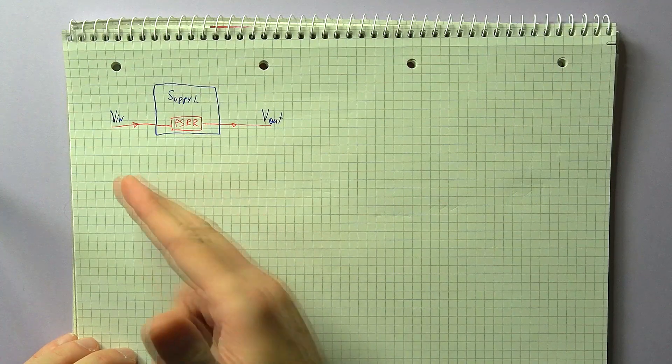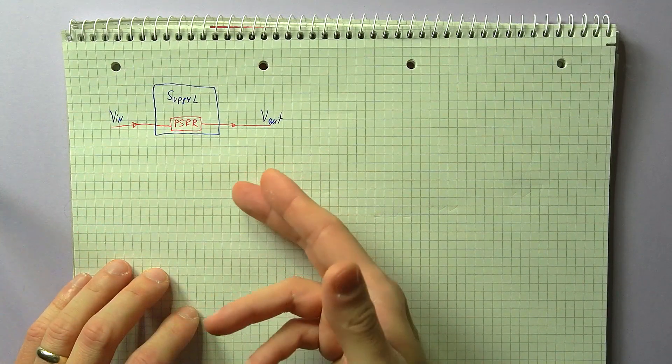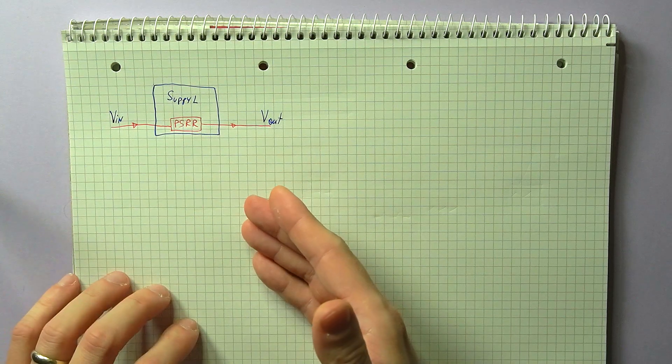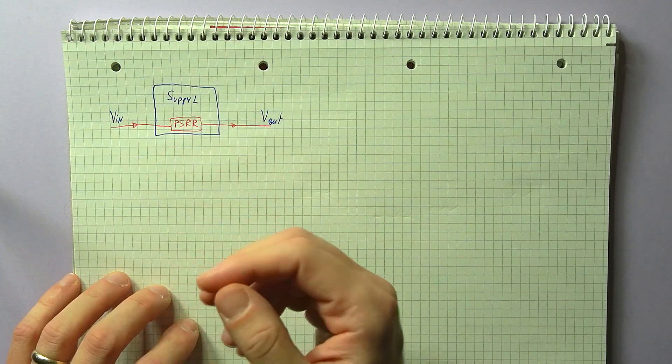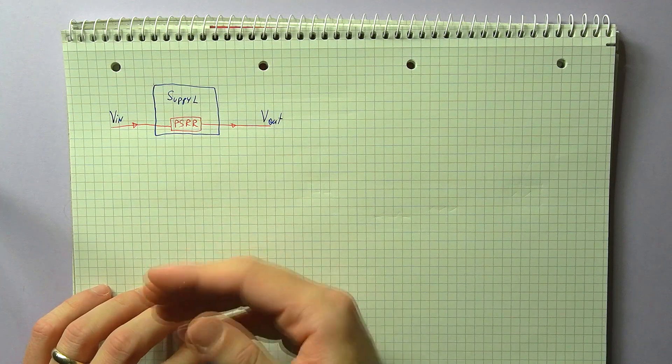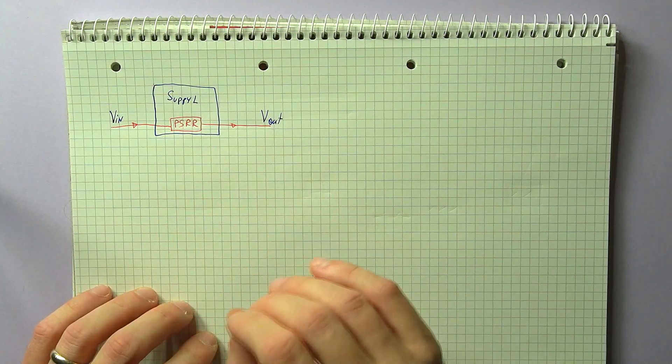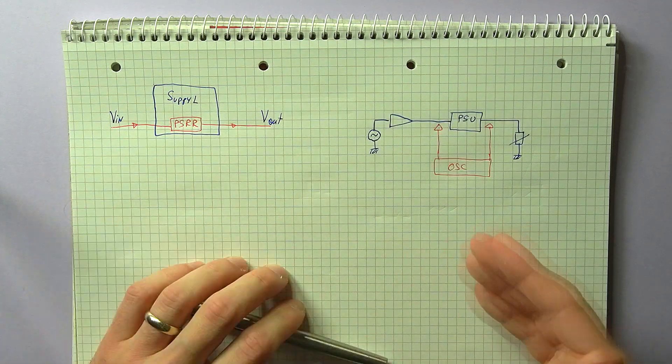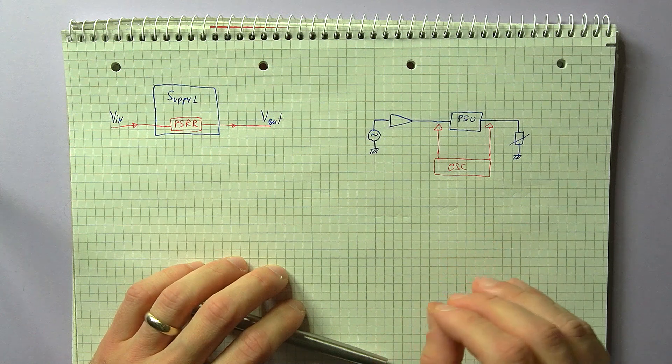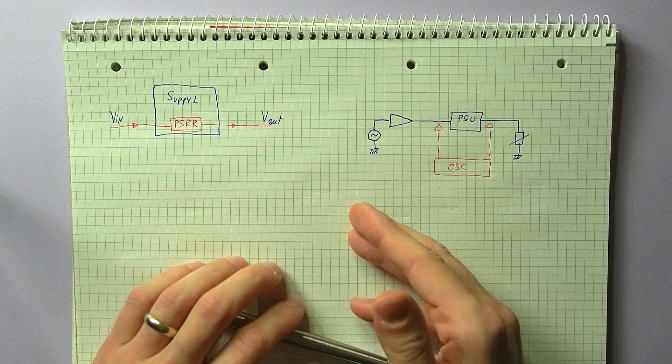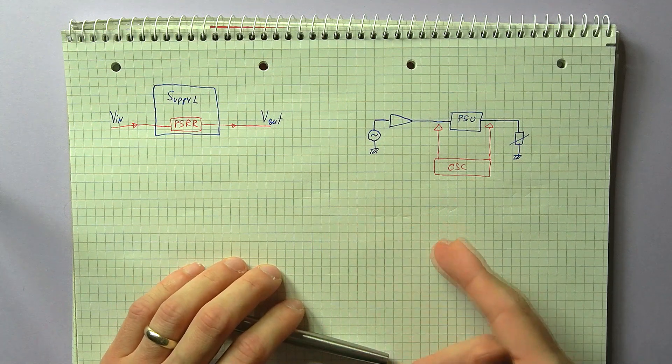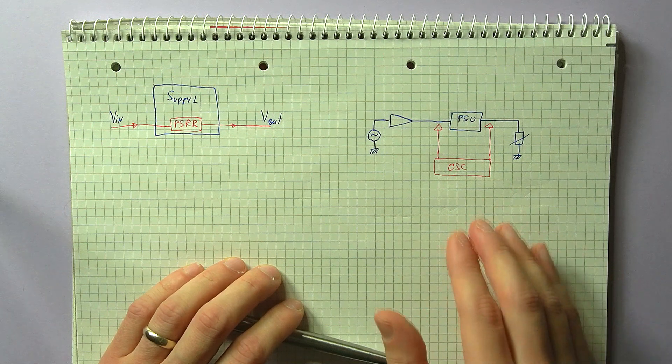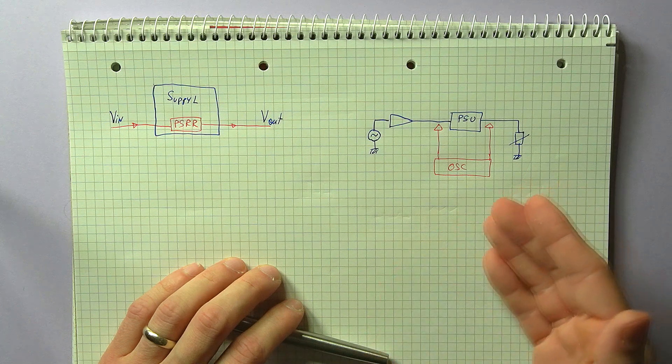When it comes to noise coming from the input side, the measure by which a supply will be able to filter it out is characterized by its power supply rejection ratio. This is a parameter that describes the attenuation the supply will present at different frequencies to noise present on the input side. So it's a non-constant frequency-dependent value. Most often, there will be some information regarding this in the datasheet. But if it's needed, the method by which it can be measured involves injecting noise on the input of the supply and sweeping the signal frequency. Both the input and output of the supply need to be measured, and then the amplitude of the specific noise frequency can be compared and plotted out in a nice graph.